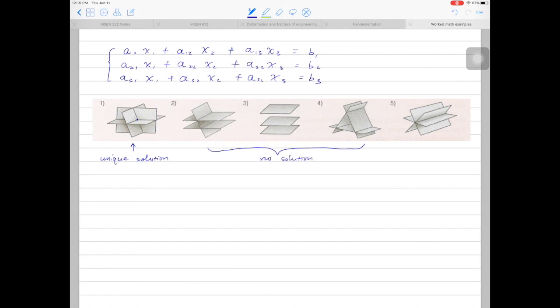In the very last case, all three planes intersect at one line, so we have infinitely many solutions. If we extend the linear system into 4, 5, 6, or more unknowns, we're going into a higher dimensional space, but the concept of whether we have a unique solution or not remains the same.